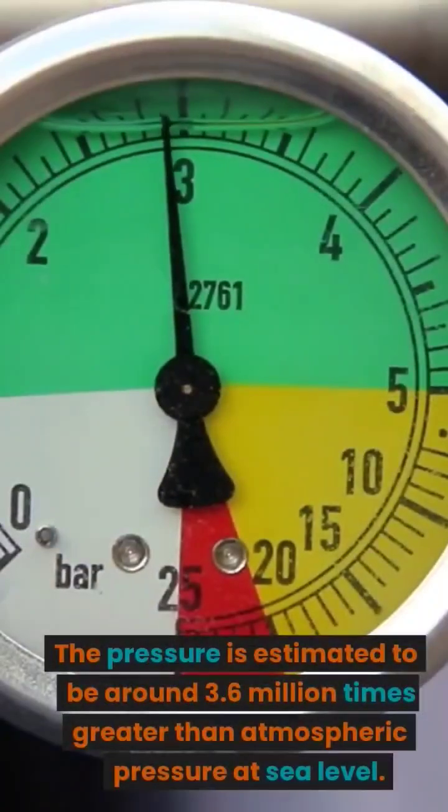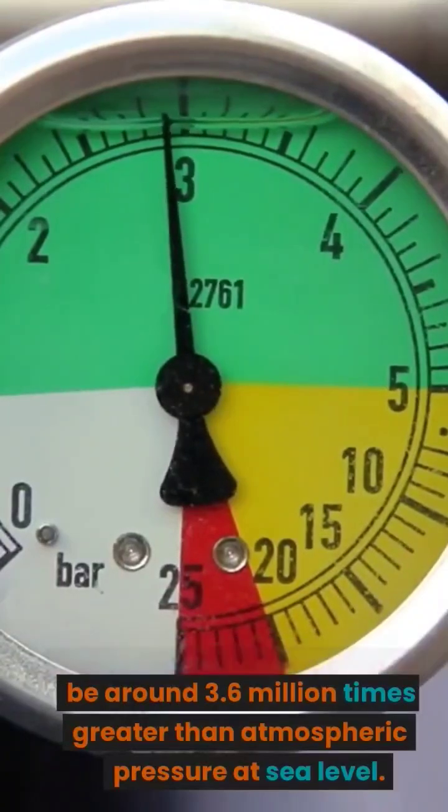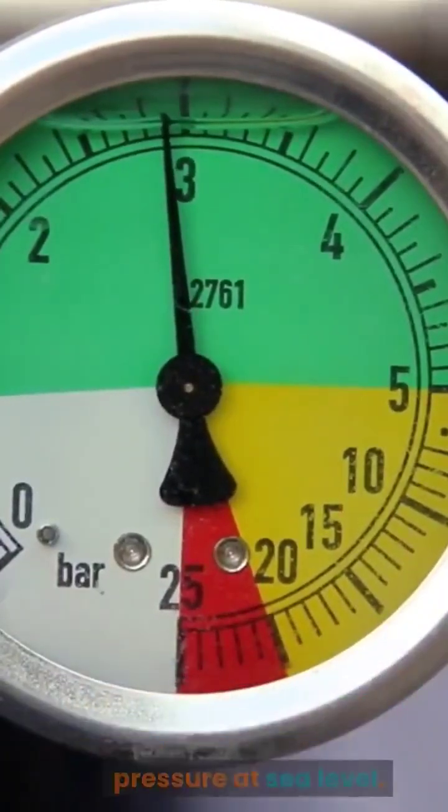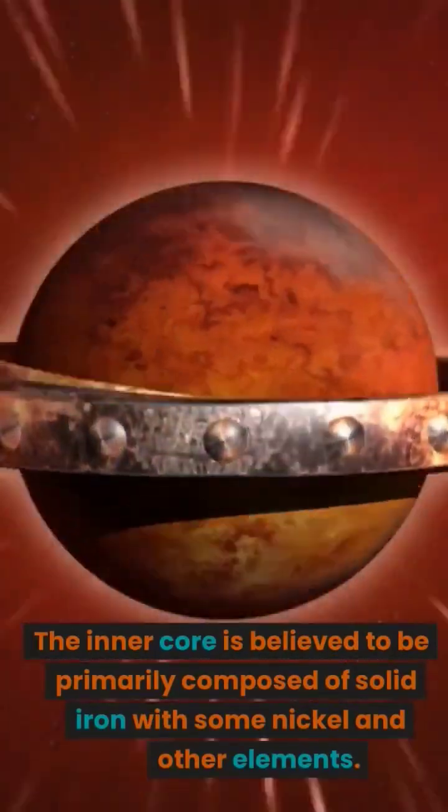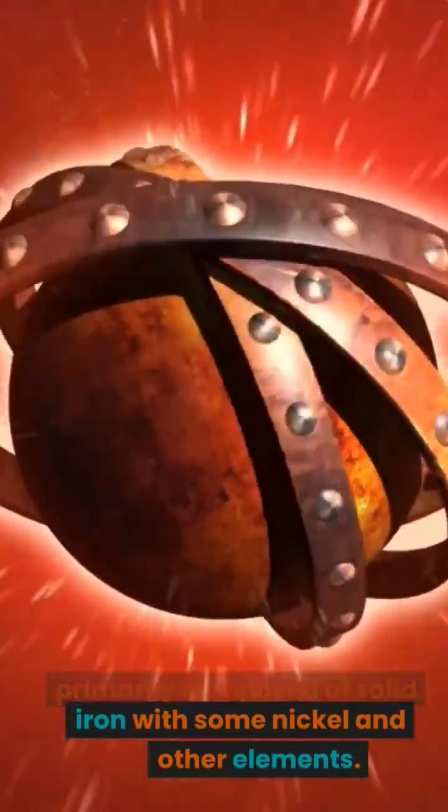The pressure is estimated to be around 3.6 million times greater than atmospheric pressure at sea level. The inner core is believed to be primarily composed of solid iron with some nickel and other elements.